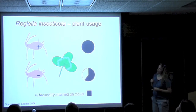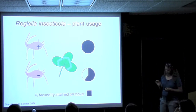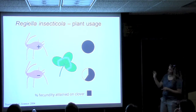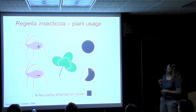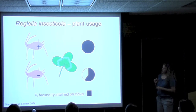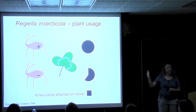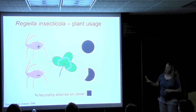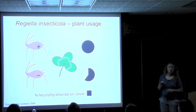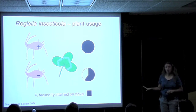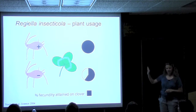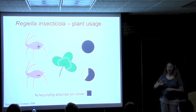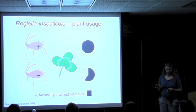Interestingly, Regiella also has some associations with host plants. A study by Tsuchida et al. showed that when they cured Regiella out of the pea aphid, they found vastly reduced fecundity on red clover compared to aphids that retained Regiella. But this is actually a considerably more complicated story — while there is correlative association between Regiella and clover, this causality was not easily replicated in follow-up studies. The causality is very unclear and particularly messy.